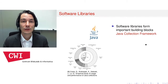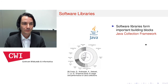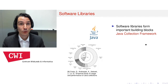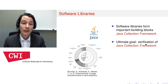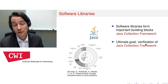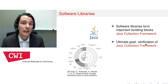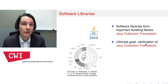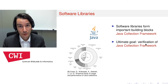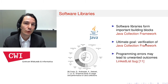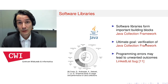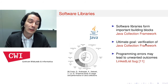Let's give a little bit of context for our work. Software libraries such as the Java collection framework are important building blocks. If there is an error in a widely used library such as the Java collection framework, this might affect lots of other programs that use it. So it's our ultimate goal to verify the Java collection framework. Previous work has shown that there are actually bugs inside it — for instance, in the linked list implementation there is an integer overflow bug.